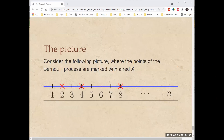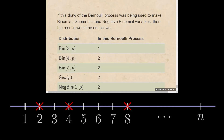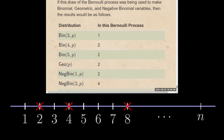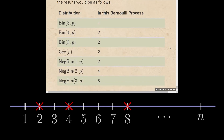Now consider the following picture, where the points of the Bernoulli process are marked with a red X. If this draw of the Bernoulli process was being used to make binomial, geometric, and negative binomial variables, the results would be as follows. The number of successes in the first three trials is 1; in the first four trials is 2; in the first five trials is also 2. The number of trials until the first success is 2; until the second success is 4; and until the third success is 8. So that's the story of the Bernoulli process — it gives rise to random variables such as Bernoulli, binomial, geometric, and negative binomial. See you next time.